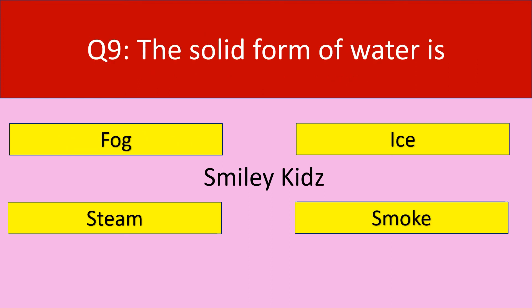Question number 9. The solid form of water is — your options are: fog, ice, steam, smoke. Your time starts now.